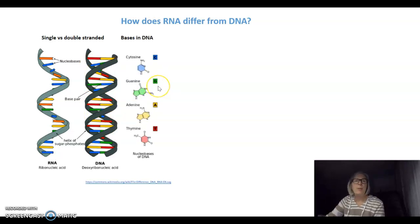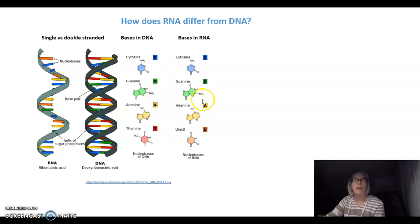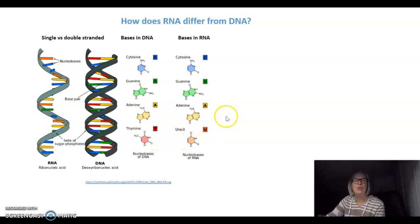We can look at the bases in RNA and DNA. In DNA we have C, G, A, and T. In RNA we have C, G, A, and U. The difference between the T in DNA and the U in RNA is one methyl group that's on the T but not present in U. So in RNA, U pairs with A, whereas in DNA, T pairs with A.